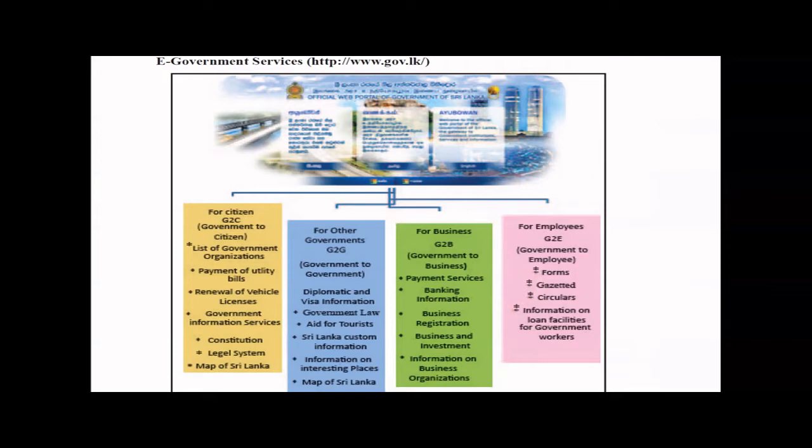In the G2C category — from government to citizens — services like paying utility bills online and renewal of vehicle licenses are provided. A lot of services are already available online. For example, even looking at a map of Sri Lanka and analyzing roads and areas can be categorized under G2C. G2G means government to government communication.